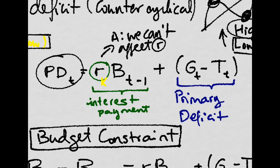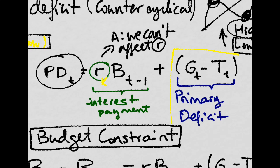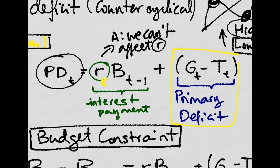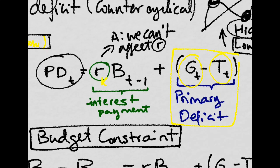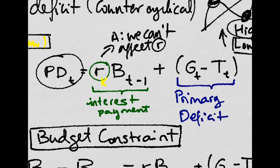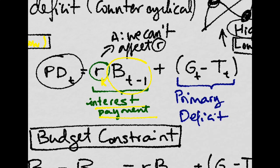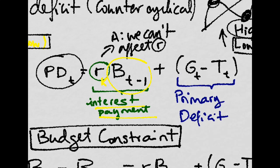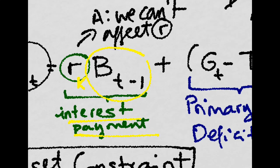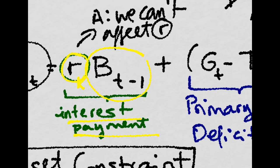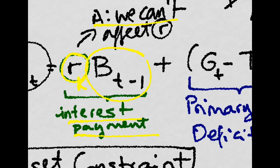We first have a primary deficit, which is just the government expenditures of the year minus the tax collection. And then we have the interest that we have to pay for the debt, the outstanding debt that we carry on from previous years. That is this interest rate, r, which is constant. We cannot affect r. It is given times the stock of debt of bonds from previous year.